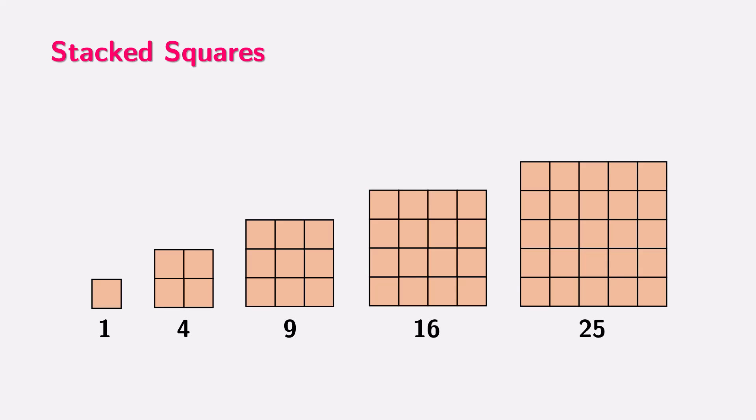A square number is the result of multiplying a number by itself. For example, one square is one times one. Four squares are two times two. Nine squares are three times three. Sixteen squares are four times four. And twenty-five squares are five times five. So, when we stack these small squares to form bigger squares, we can visually see how square numbers grow. Each time, the number of squares increases in a way that matches the pattern of square numbers.